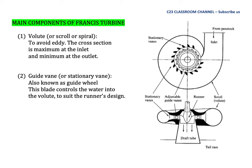Number two: Guide Vane, also known as Guide Wheel. This blade controls the water into the volute to suit the runner's design. We will see the location of the Guide Vane in the next chapter.